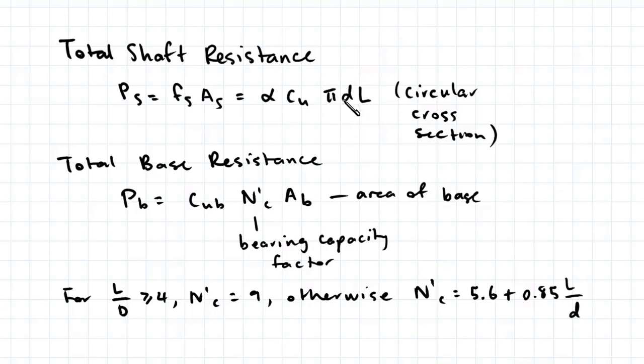The total base resistance is defined as the product of Cub, N-C, and AB. So Cub is a cohesion of the soil below the base of the pile, N-C is a bearing capacity factor defined below, and AB is the area of the base. To find N-C, you need to first find a ratio of the pile length and diameter. And if the ratio is bigger than 4, then N-C is equal to 9. Otherwise you use this equation here.